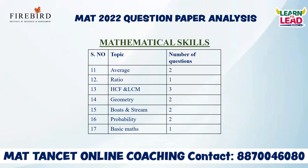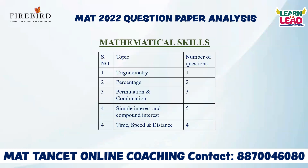Geometry — two questions; Boats and Streams — two; Probability — two questions; Basic Maths — one. So in total, they have asked 40 questions in Mathematical Skills and almost all topics have been covered.